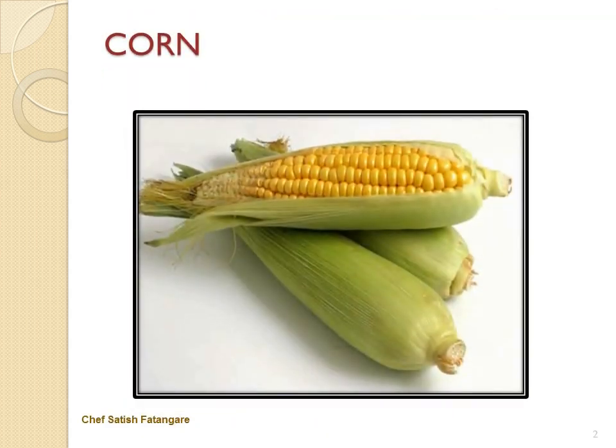In this slide we will discuss about corn. It is also known as maize. It is a cereal grain first domesticated by indigenous peoples in southern Mexico about 10,000 years ago. Corn is a starchy vegetable and cereal grain that has been eaten all over the world for centuries. It's rich in fiber, vitamins and minerals.